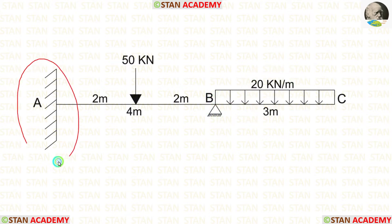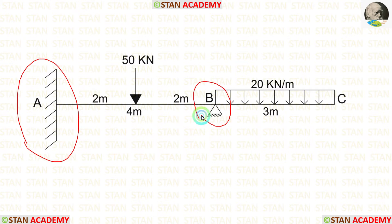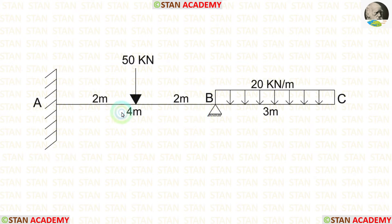At point A, there is a fixed support. At point B, there is a hinged support. Span AB is 4 meters long, and the overhanging span BC is 3 meters long.